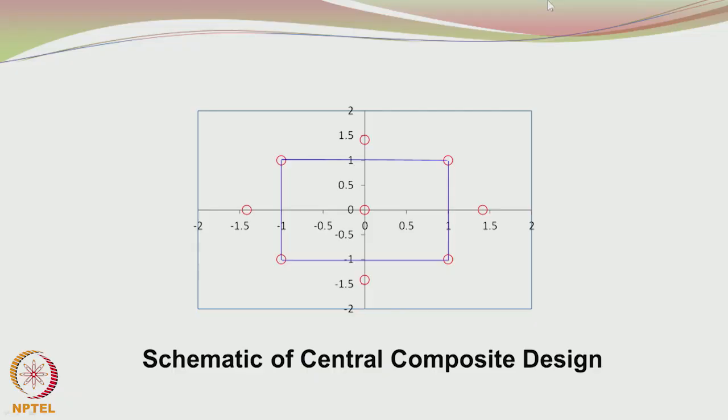Now let us look at a very popular second order statistical experimental design based on the second order model. This is the central composite design. You can see that we have a square here. We are talking about two factors, two variables.